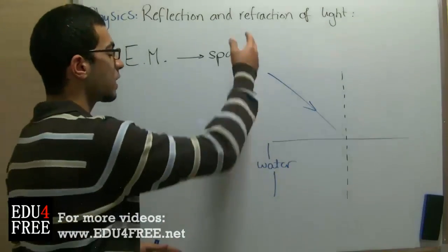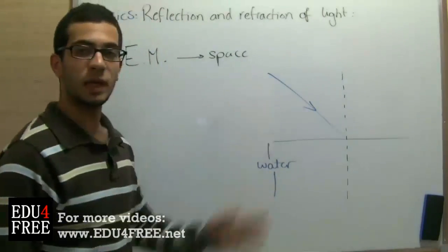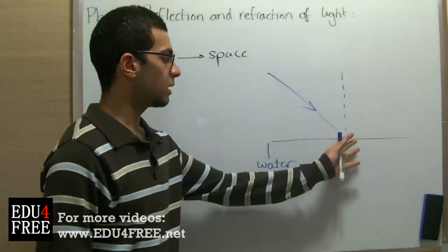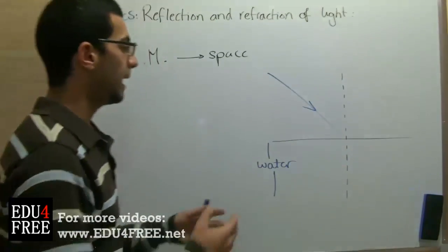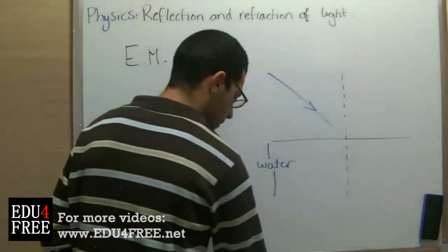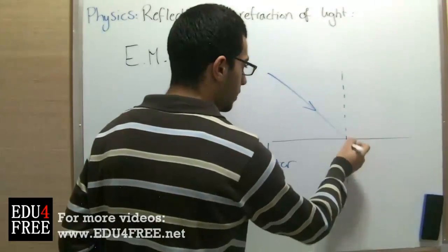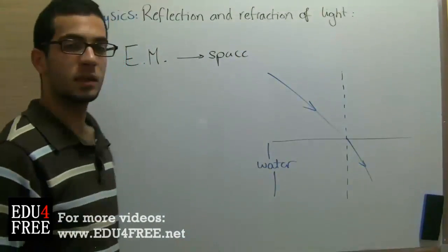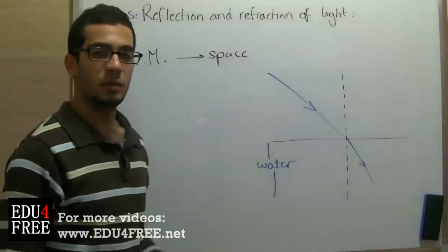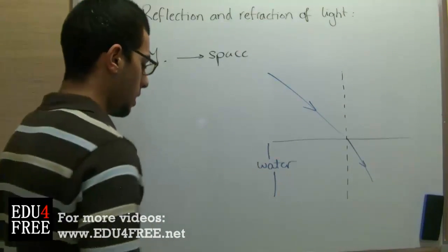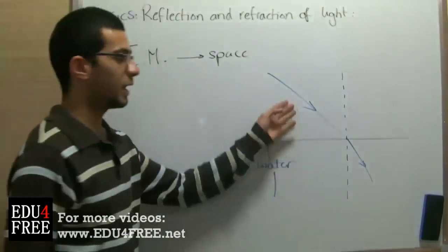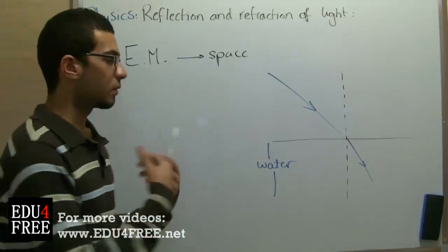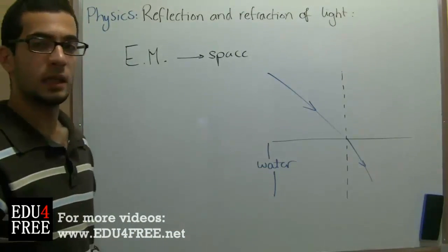Reflection happens so that we can see the medium. Refraction occurs because the speed of light in space is the highest, so when it enters another medium its speed decreases and it refracts toward the medium. Some of the light is absorbed in order to give the medium its color — the same colors of the light beam are absorbed and the rest of the light spectrum is reflected so that we can see the medium.